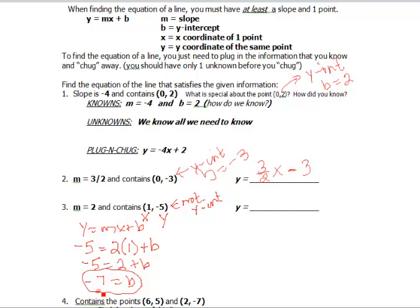then b is negative 7. So now I know b and I know m, and I can put both of those together to make the equation y equals 2x minus 7.